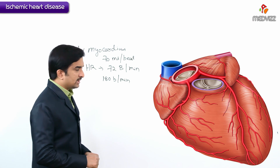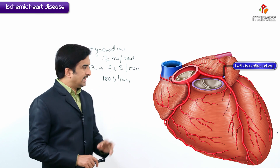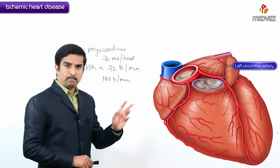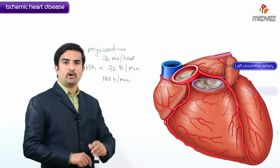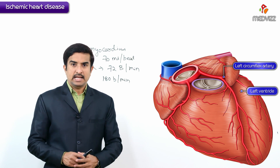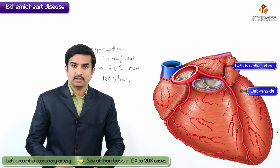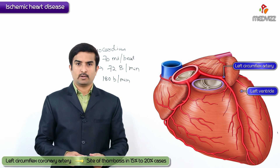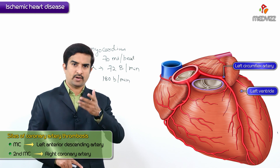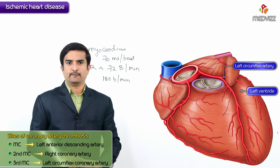The left circumflex coronary artery supplies the lateral wall of the left ventricle in 80 percent of individuals. It is the site of 15 to 20 percent of coronary artery thrombosis, making it the third most common site after the LAD and the right coronary artery.